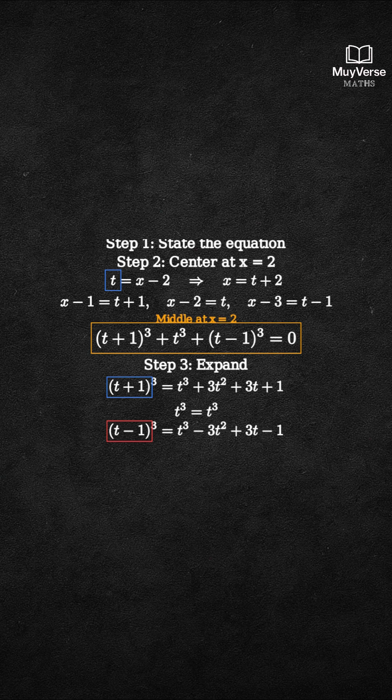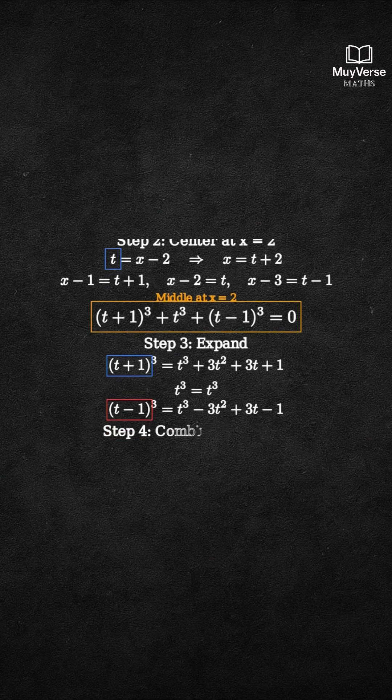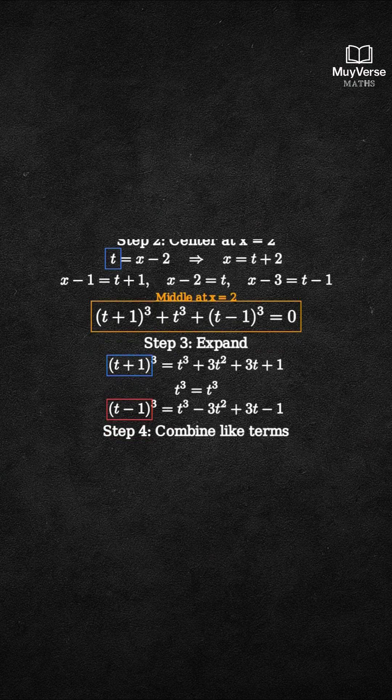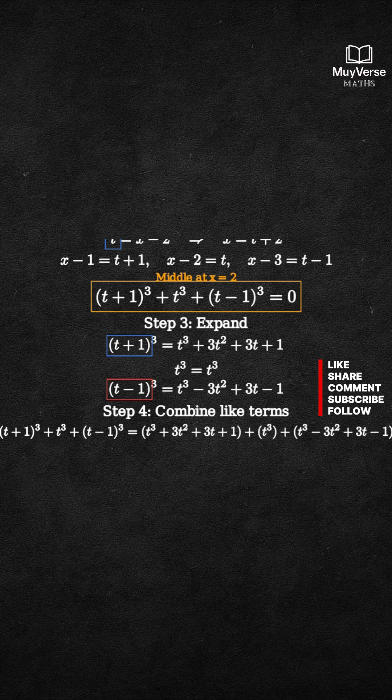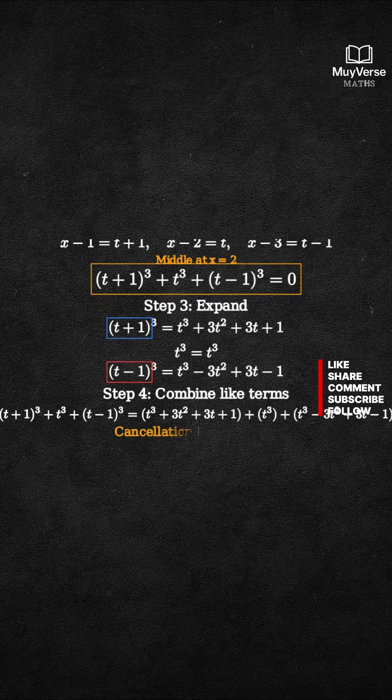Step 4. Add all three expanded lines. We get t cubed plus 3t squared plus 3t plus 1 plus t cubed plus t cubed minus 3t squared plus 3t minus 1.